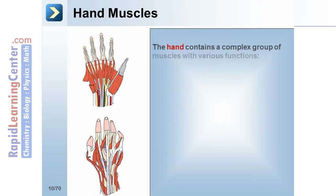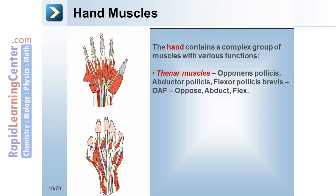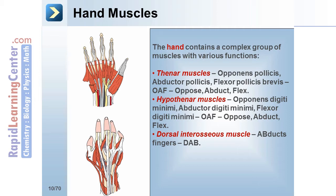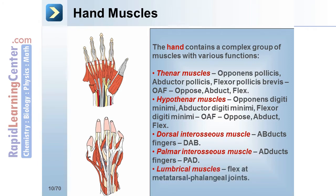The hand contains a complex group of muscles with various functions. The thenar muscles include opponens pollicis, abductor pollicis, and flexor pollicis brevis. Their function can be remembered through the abbreviation OAF: oppose, abduct, flex. The hypothenar muscles are the opponens digiti minimi, abductor digiti minimi, and flexor digiti minimi — also remembered with OAF: oppose, abduct, flex. The dorsal interosseous muscle can be remembered to abduct the fingers, or DAB, and the palmar interosseous muscle adducts the fingers, or PAD. The lumbrical muscles flex at the metatarsophalangeal joints.